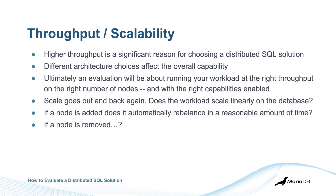Throughput and scalability: higher throughput is a significant reason we choose distributed SQL, but different architectural choices affect overall capability. Ultimately you want to run your workload at the right throughput on the right number of nodes with the right capabilities enabled. Scale goes out and back again — can you scale out AND scale back? When you add a node, does it automatically rebalance in an appropriate amount of time? And when a node is removed and it rebalances, are you able to keep up with your workload? These are things you want to look at when evaluating.